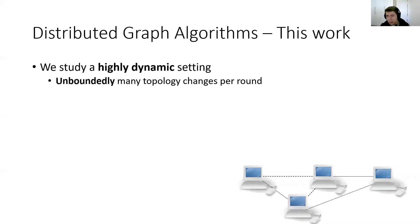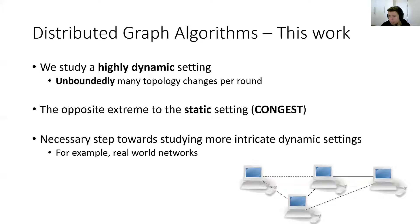In this work, we study a highly dynamic setting, where unfortunately many topology changes may occur per round. This can be seen as an opposite extreme to the static setting in congest, where the network remains completely static. An additional motivation for us, in addition to just studying this model for its own sake, is that we think it's a necessary step towards studying more intricate dynamic settings.